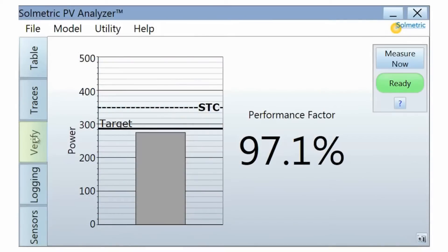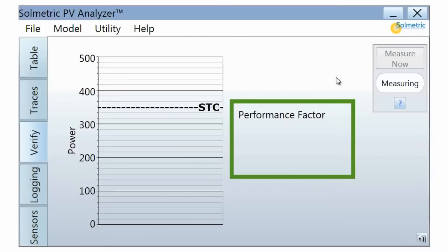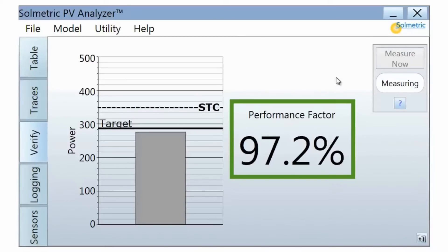The Verify tab shows a simple percentage value that represents the measured power output as a percentage of the power predicted by the performance model. This percentage is called the performance factor, and it provides a quick and simple method of performance verification.